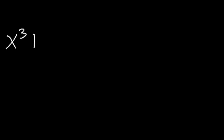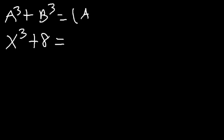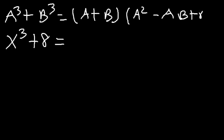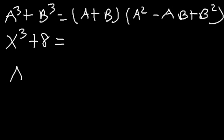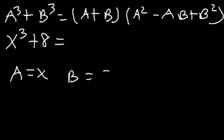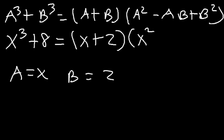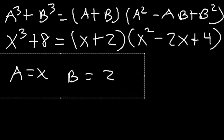Now consider x³ + 8. We have a sum of cubes, so we use a³ + b³ = (a + b)(a² - ab + b²). Here a³ = x³ so a = x, and b³ = 8 so b = 2 (since the cube root of 8 is 2). This gives (x + 2)(x² - 2x + 4).